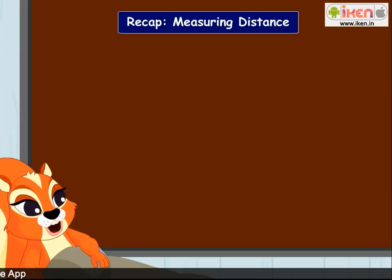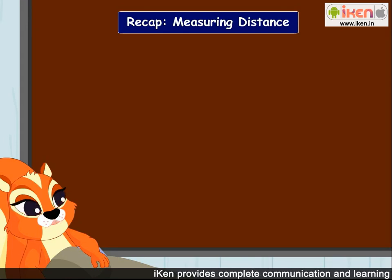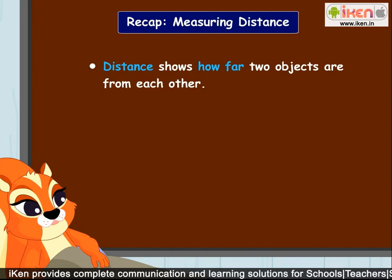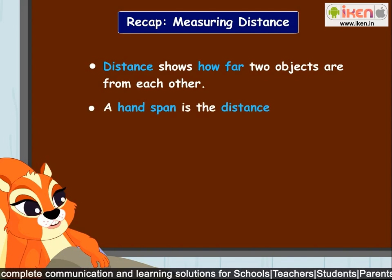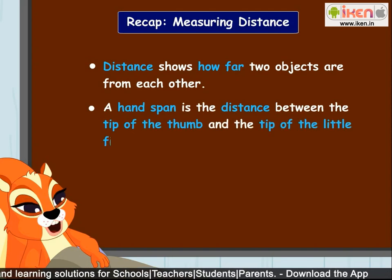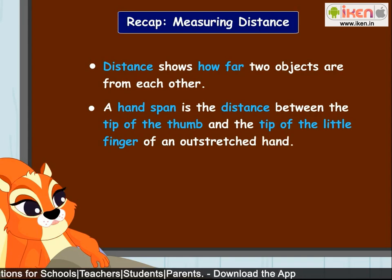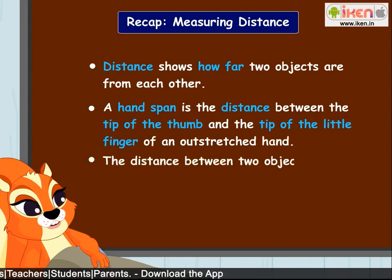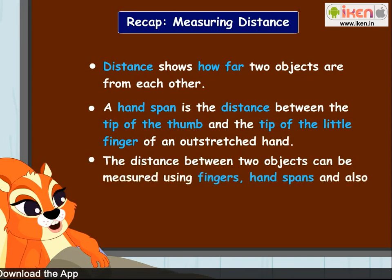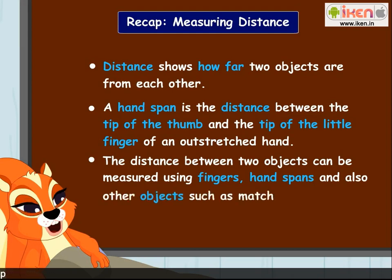I am so happy — my friends came to teach me today. I feel as if I have not missed school at all! Let me quickly repeat what I learnt about measuring distance: Distance shows how far two objects are from each other. A hand span is the distance between the tip of the thumb and the tip of the little finger of an outstretched hand. The distance between two objects can be measured using fingers, hand spans, and also other objects such as matchsticks.